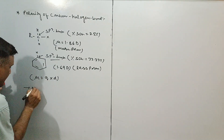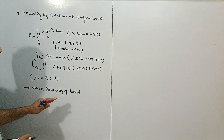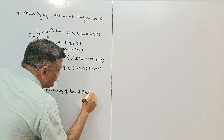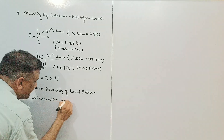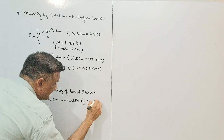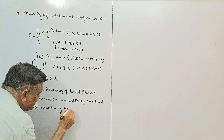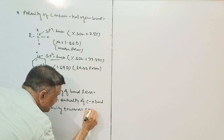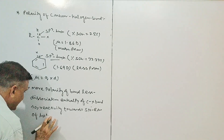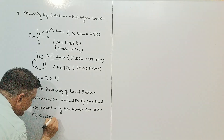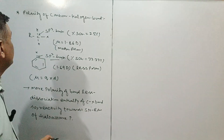More polarity of bond means less dissociation enthalpy of C-X bond, so reactivity towards SN reaction of haloarene increases. Yeh tha aapke paas third factor.